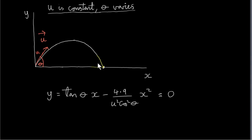Now let's prove that. So we are given that the initial speed U is constant, but theta can vary. We saw in the last video that the equation of the trajectory is given by this here. So what we are interested in doing is to find the range.